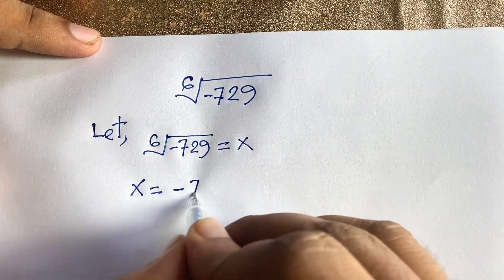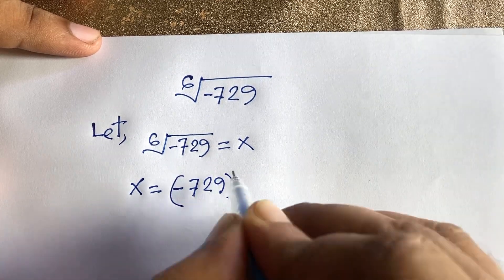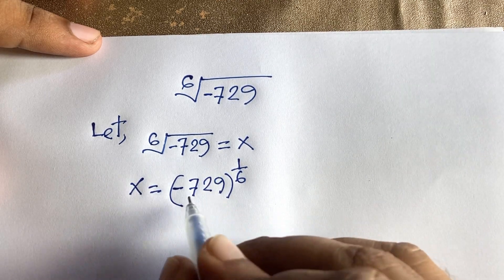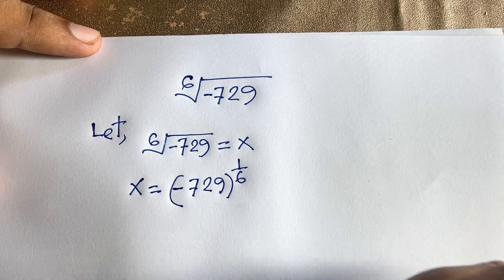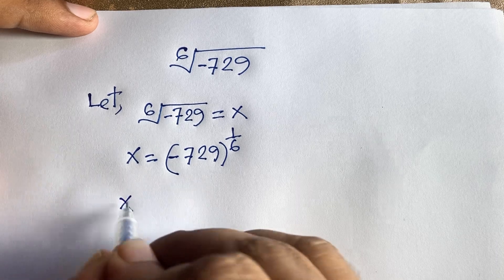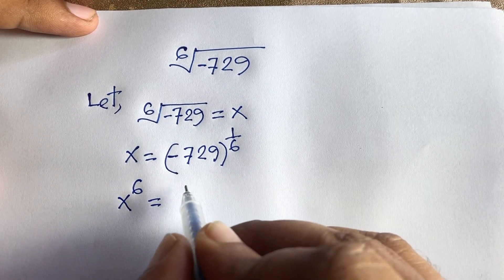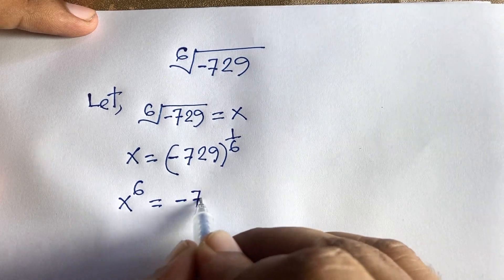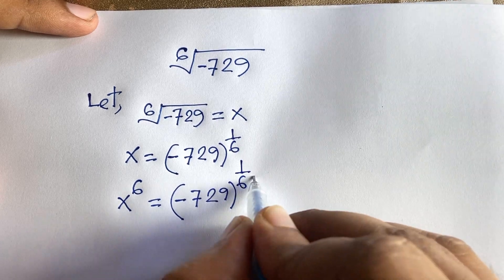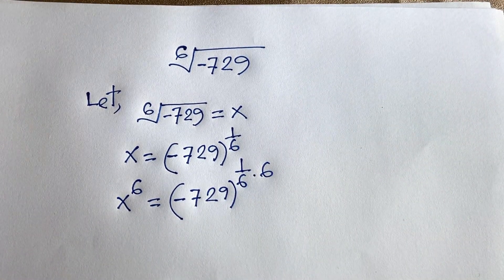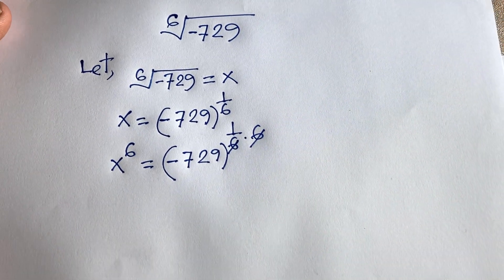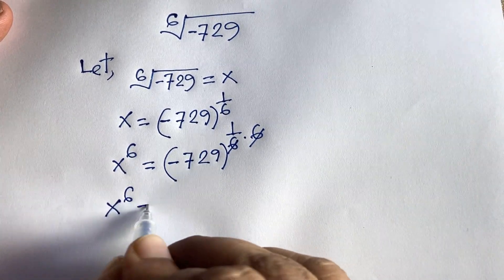So x equals minus 729 to the power 1 over 6. Now I'll raise both sides to the power of 6: x to the power 6 equals minus 729 to the power 1 over 6 times 6. The 6s cancel, giving us x to the power 6 equals minus 729.